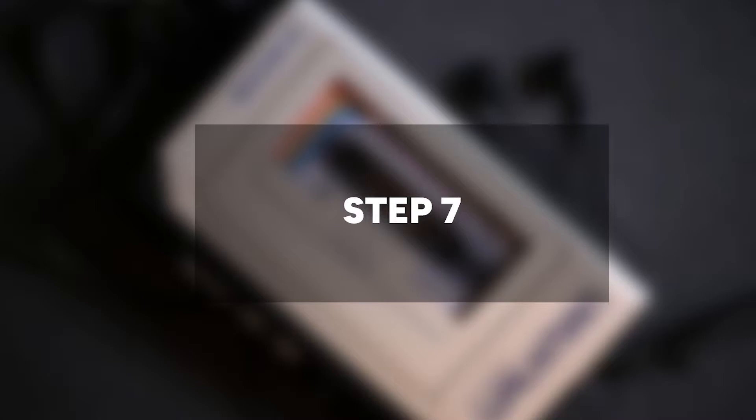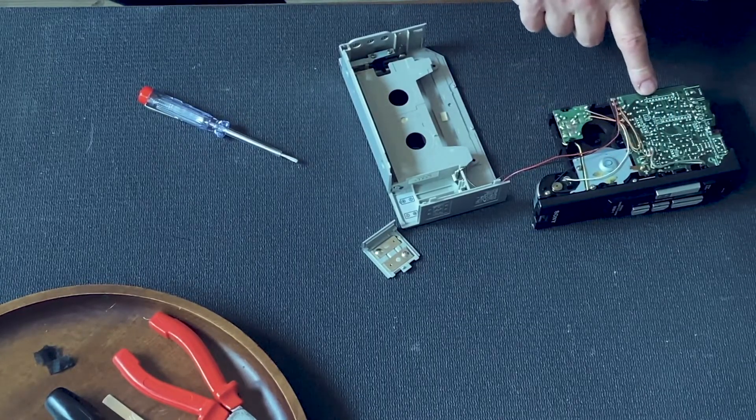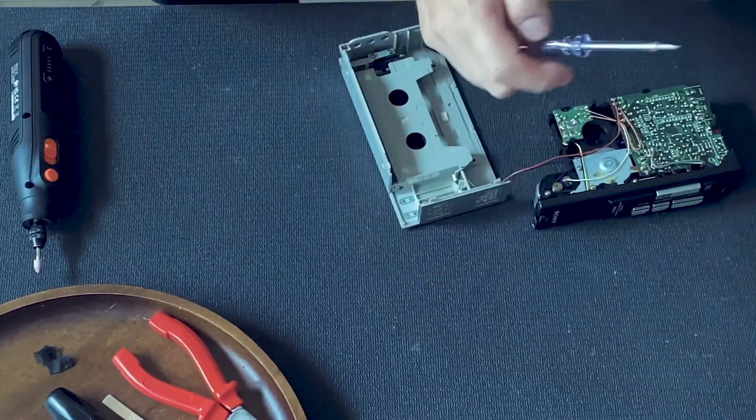Step 7: Carefully detach the circuit board. First, loosen the cables, then remove the single screw holding it in place. Gently remove it from the plastic holding clip and set it aside.